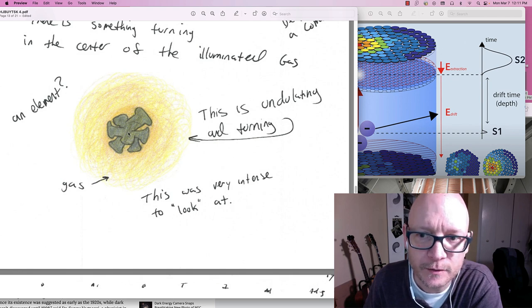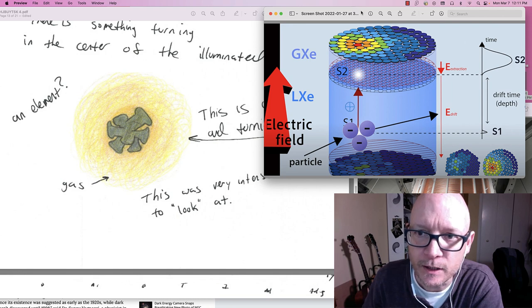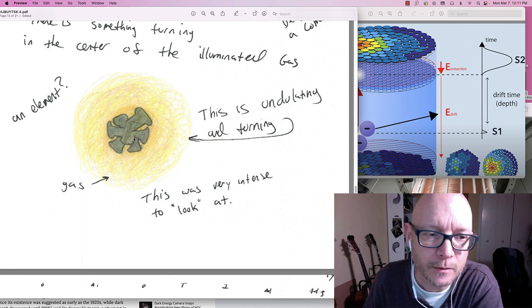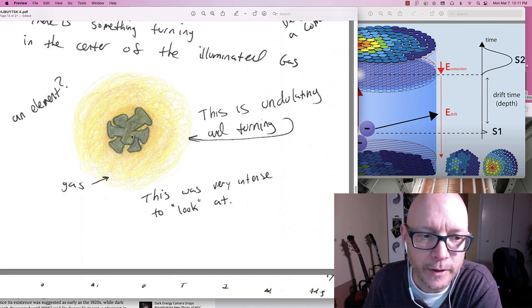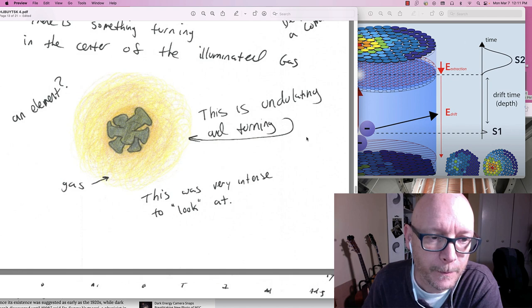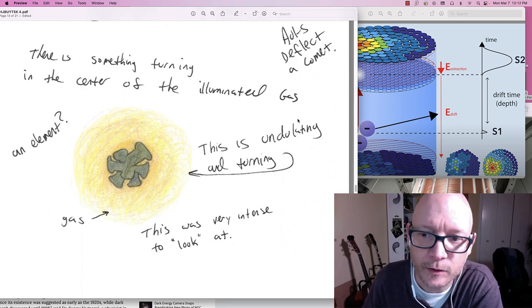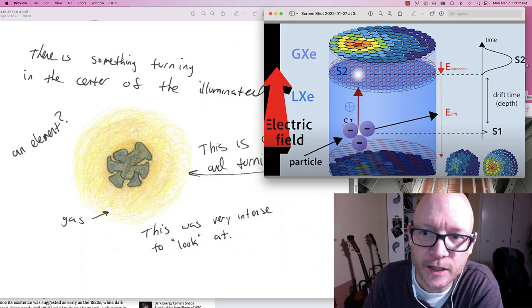For me. What I'm looking at. Is a weakly interacting massive particle. Right here. And I saw it. Perceived it. And I drew it. Exactly as I saw it. Just like that. That's it. This is what they're looking for. Inside of the gas chamber. Here. The xenon gas chamber.